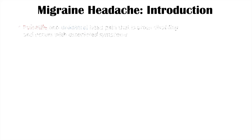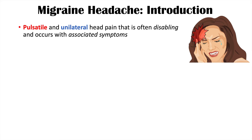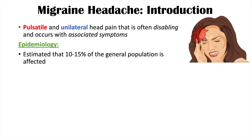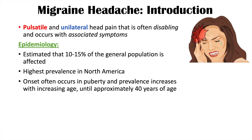Migraine headaches are pulsatile, unilateral head pain that is often disabling and occurs with associated symptoms. Migraine headaches occur in a large portion of the population — it's estimated that 10 to 15 percent of the general population is affected. The highest prevalence appears to occur in North America. Onset appears to occur in puberty, with prevalence increasing until approximately 40 years of age, after which they tend to taper off.